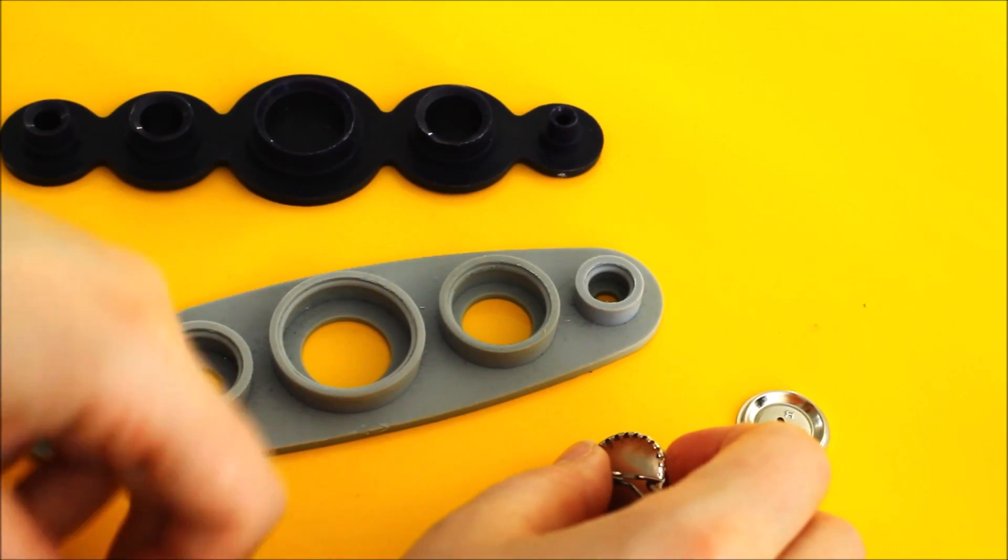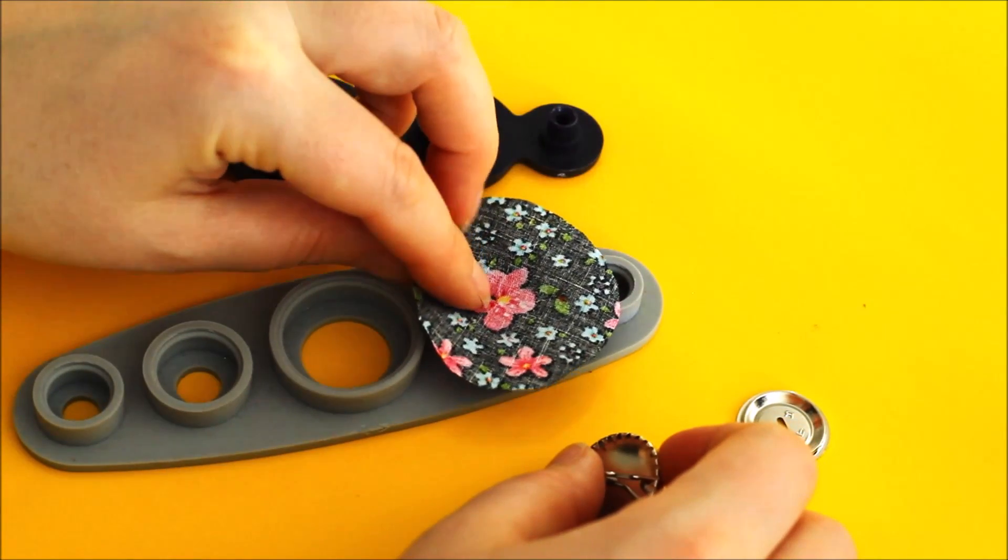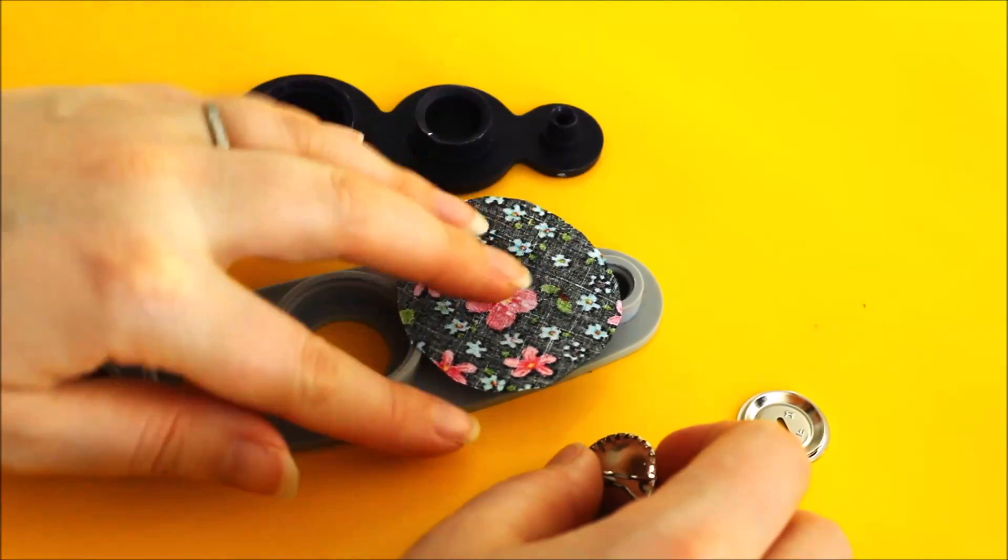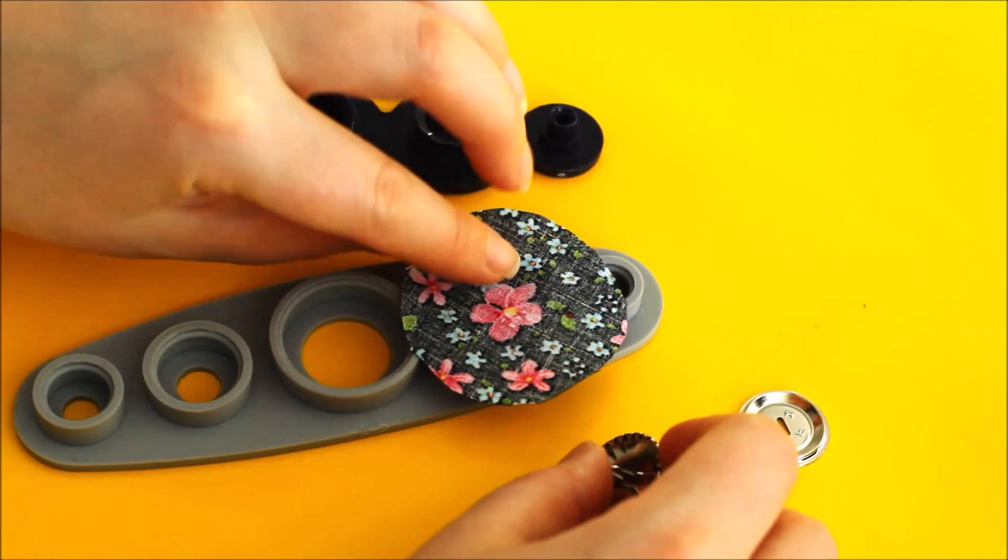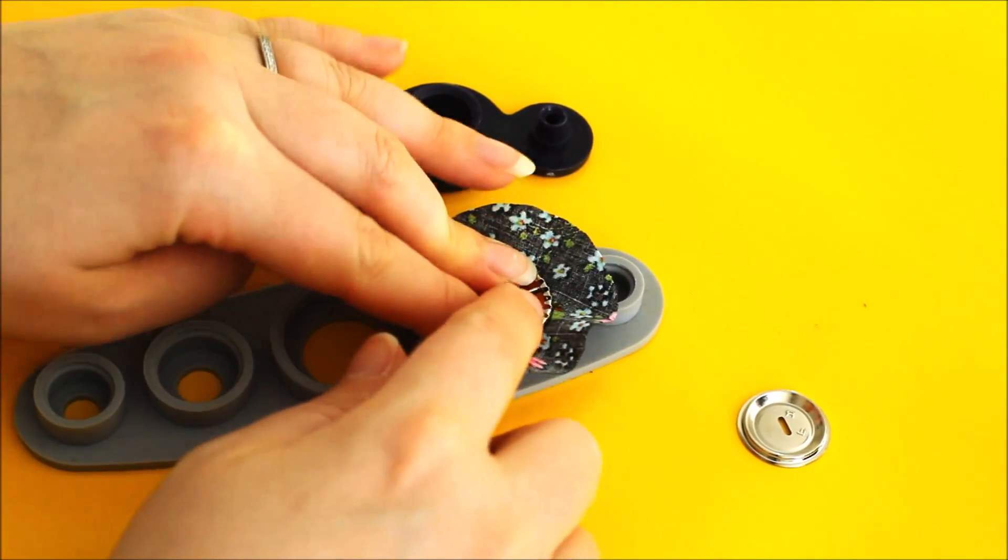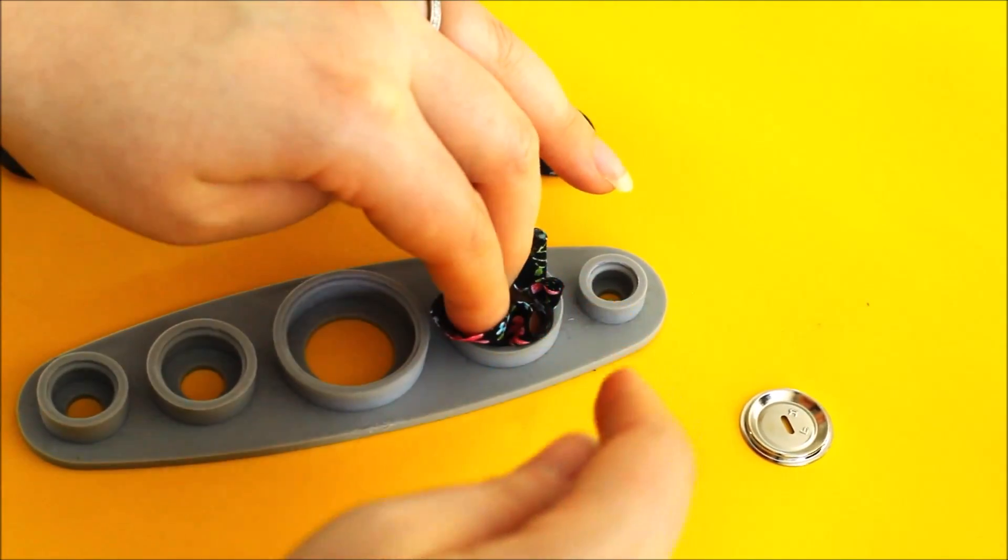You've got to place your fabric inside first. You place that face down that way. So again, we want to make sure that this flower is going to sit right in the centre. So you might want to just take a minute just to adjust it. You pop your button on the top and then you push it into that gap.